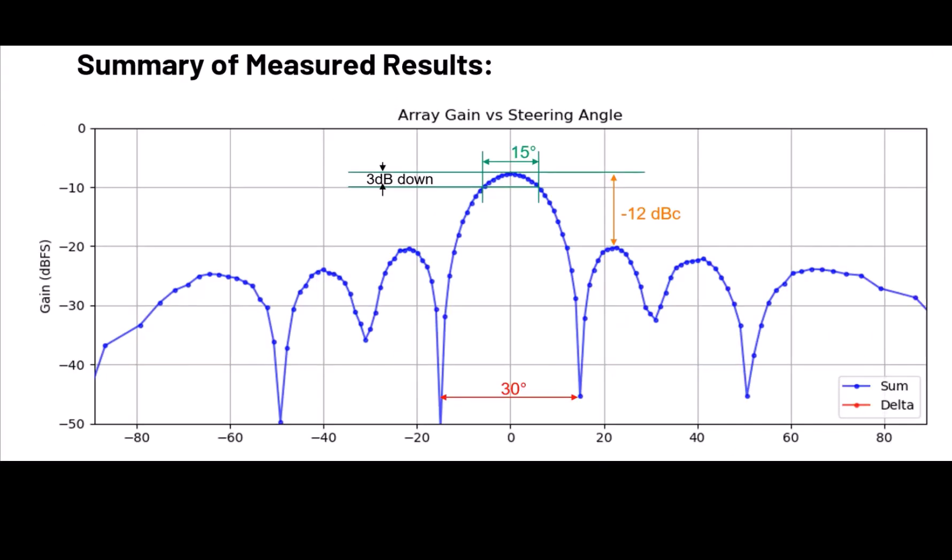And here's a summary of those measurements that we just made. We recorded about a 15-degree half-power beam width. Or if you'll remember, for an 8-element array, we had calculated that it should be 13 degrees. And then a 30-degree null-to-null spacing for the first null. We had also calculated 30 degrees. The first null-to-null spacing is a little bit easier, a little more accurate to get a read on because these nulls are so sharp and deep.